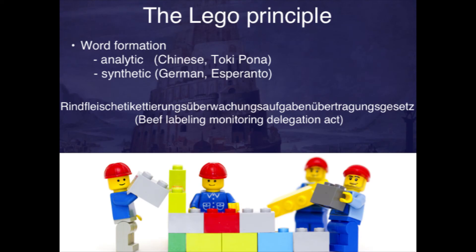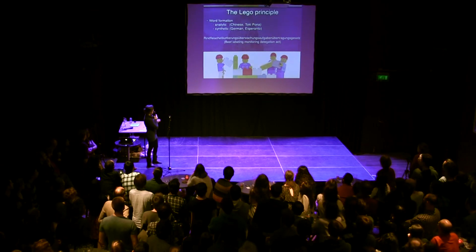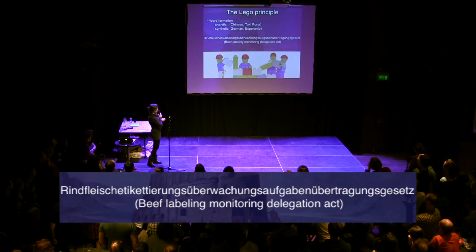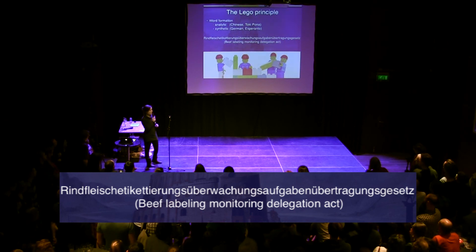What do I mean by the Lego principle? There are two types of languages. Analytic languages, like Chinese or Toki Pona — these are languages that have words all by themselves, where the words don't get endings that add meanings. And synthetic languages, which kind of put stuff onto words, put words together so that these words get meanings in addition to what the root word says. For example, German is a synthetic language. There's this awesome word: Rindfleischetikettierungsüberwachungsaufgabenübertragungsgesetz — which is the Beef Labeling Monitoring Delegation Act, and it's a real German law.